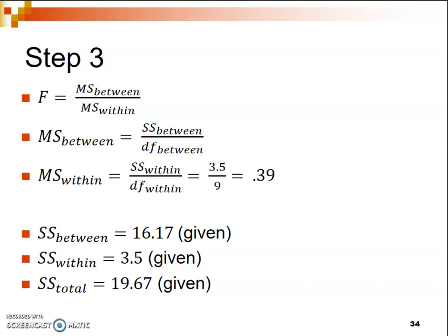Next, let's move on to MS between, which is solved by dividing the sum of squares between by the degrees of freedom between. The sum of squares between was 16.17, divided by the degrees of freedom between of 2. That gives us 8.09 after rounding. Then we use these two values to find our F ratio — we divide MS between by MS within: 8.09 divided by 0.39, which gives us an F ratio of 20.74.